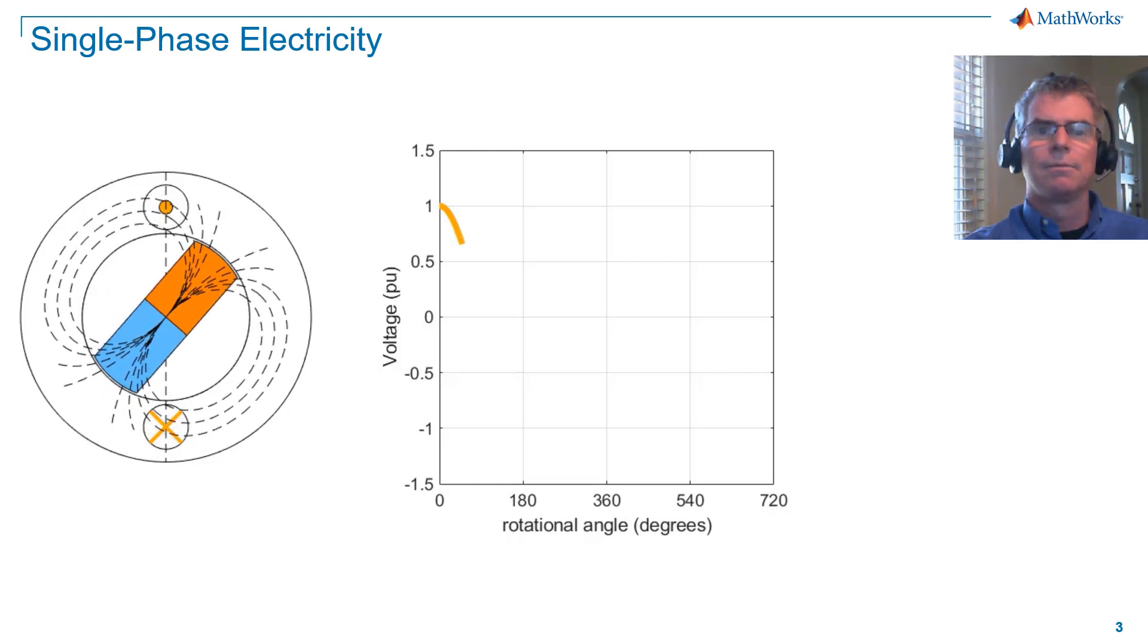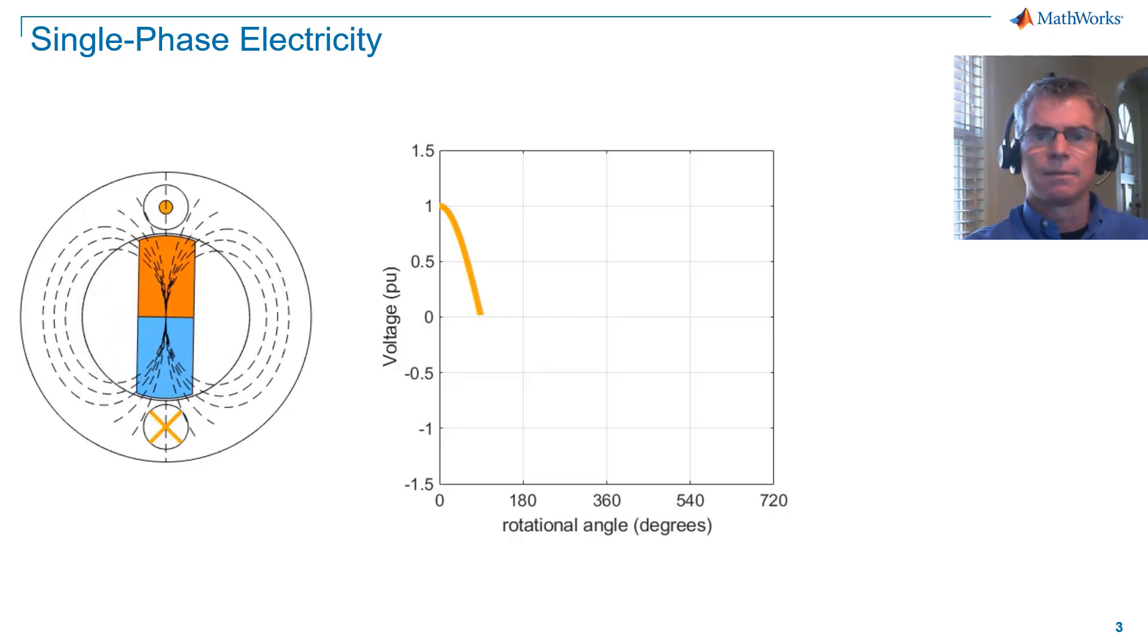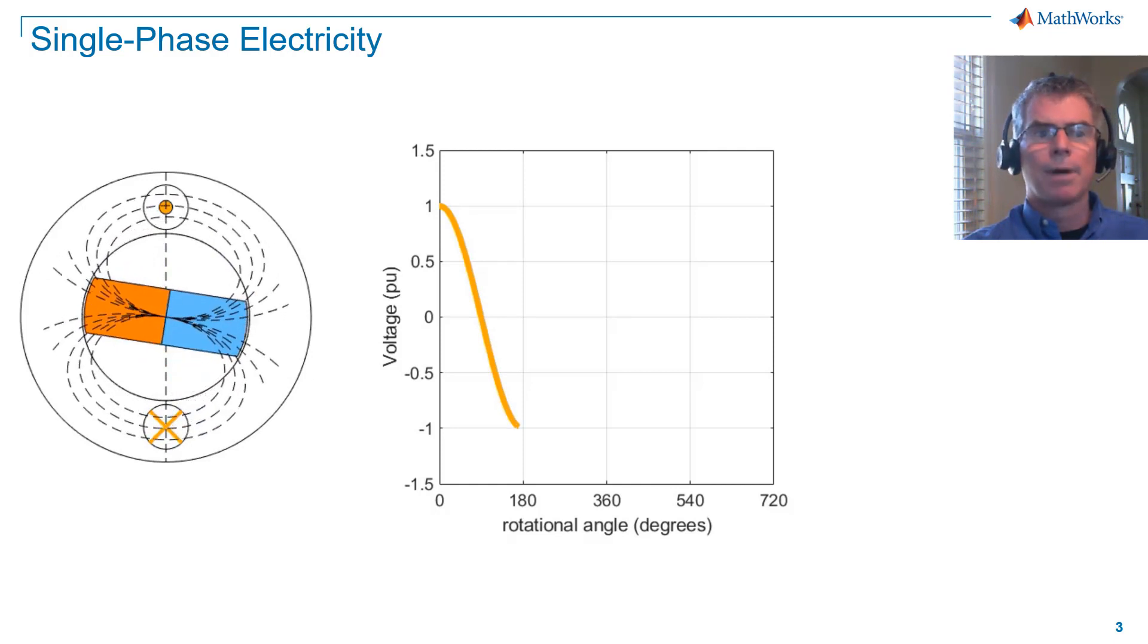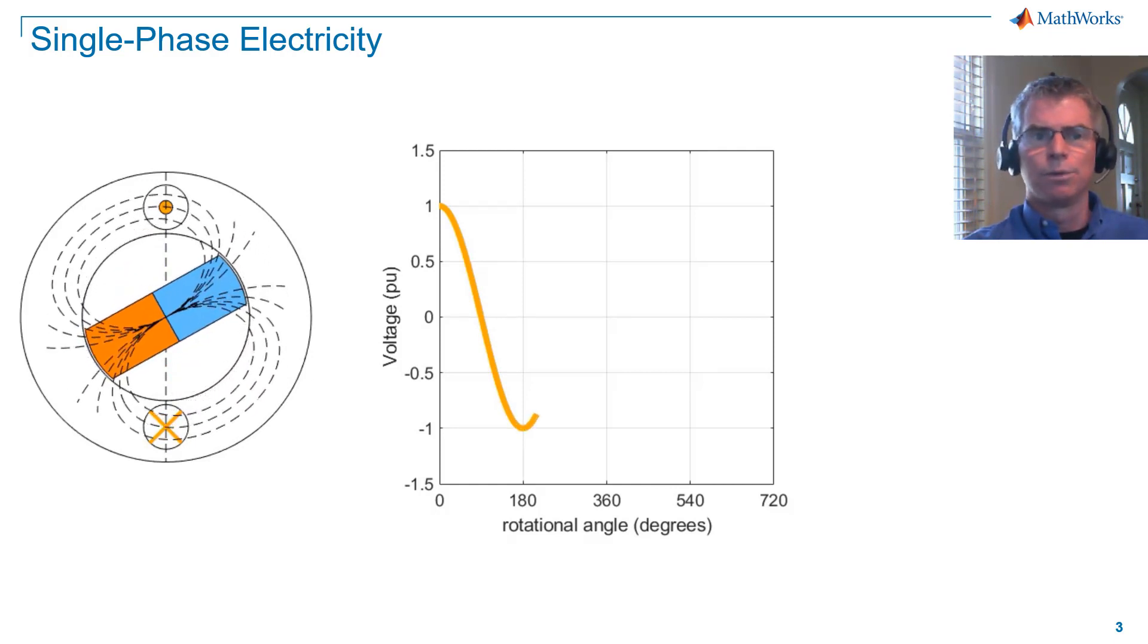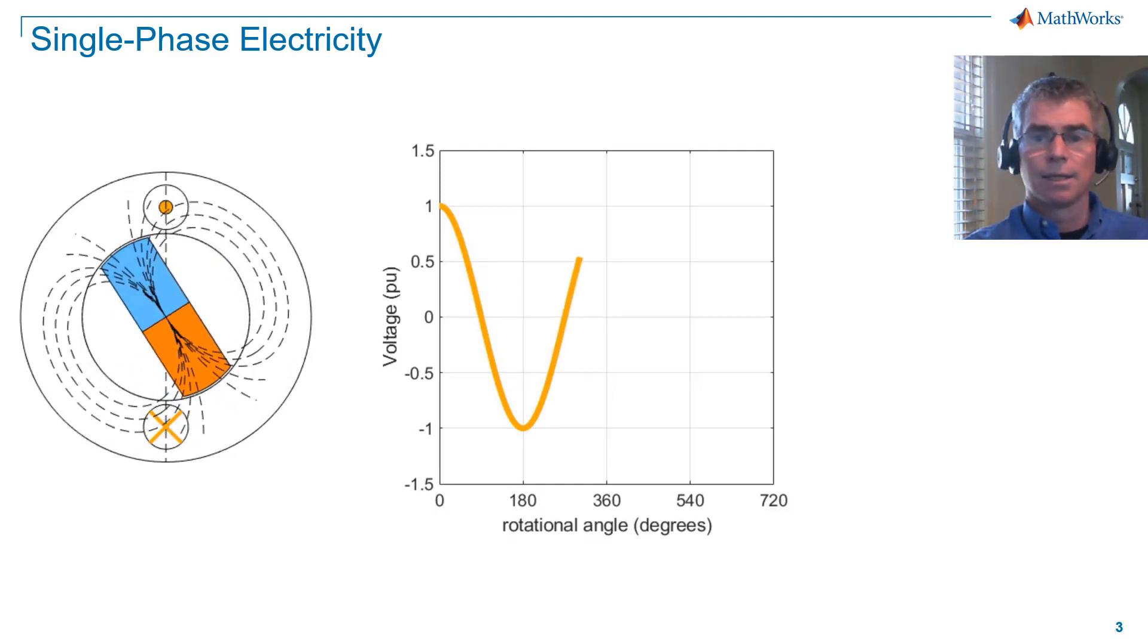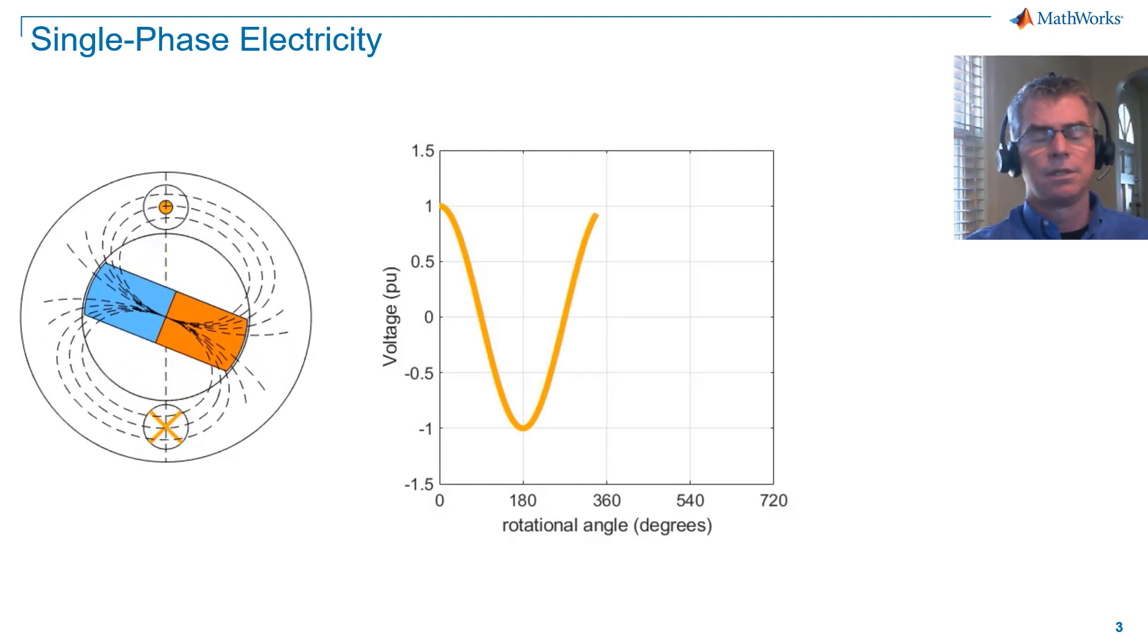If we now rotate the magnet, you'll see that a voltage is generated as the magnetic field lines cut through the coil. We get maximum positive and negative voltage when the magnet is oriented at 90 degrees to the coil. When the magnet is aligned with the coil, voltage is zero.